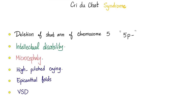This brings us to Cri-du-Chat syndrome. The problem is a deletion of the short arm of chromosome 5, written as 5P-. There is intellectual disability, microcephaly, and high-pitched crying that sounds like the cry of a cat. There are also epicanthal folds and VSD — similar to Edwards and Patau, but not Down syndrome, which mostly had ASD.